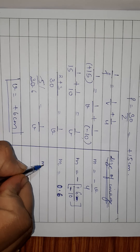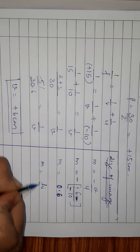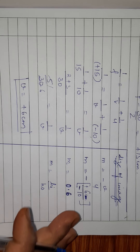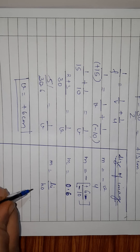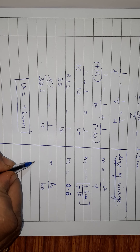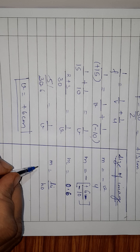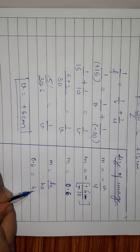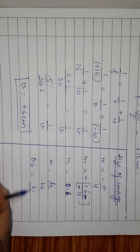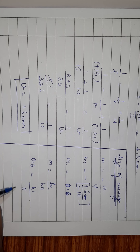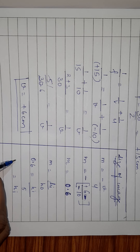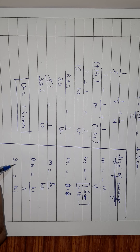Using the other form: M equals height of image upon height of object. So 0.6 equals height of image upon 5 centimeter. Cross multiplying: height of image equals 3 centimeter.